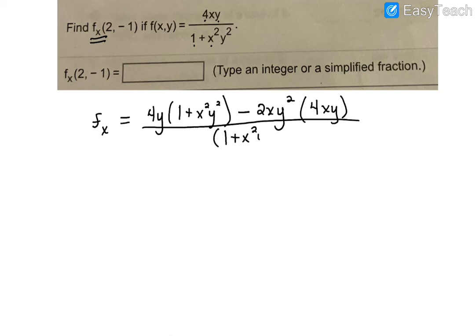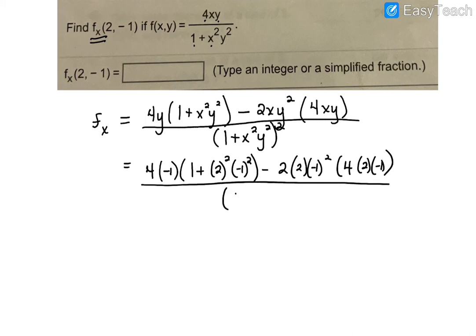Now since you're plugging in, if you wanted, you could just go straight to plugging in and get on your calculator as opposed to simplifying. So on top, we're going to have a 4 times my y is negative 1. And then I'll have a 1 plus my x is 2. So that'll be a 2², negative 1². And then we have minus a 2 times 2 times negative 1², times a 4 times a 2 times a negative 1. And then all divided by 1 plus 2², negative 1², and then that whole thing squared.